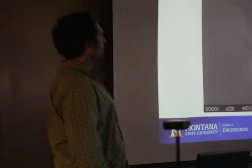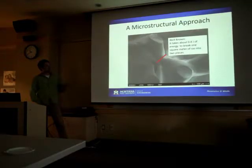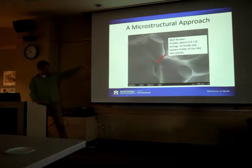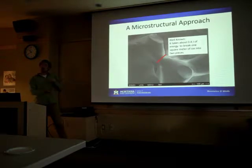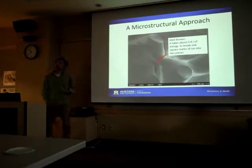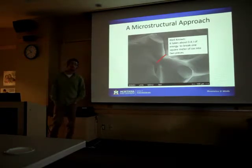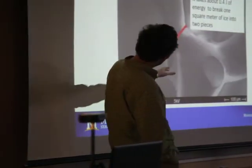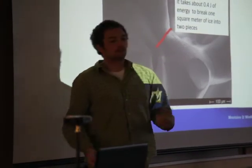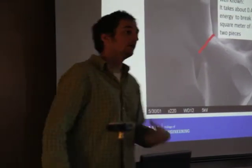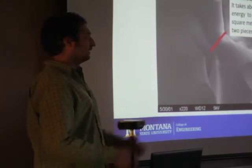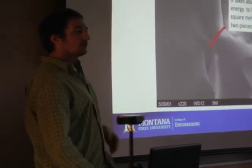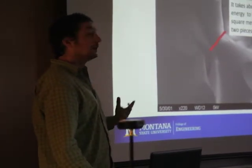We know from the literature on ice that for a bond hypothetically a square meter in size, it would take about 0.4 joules of energy to break it into two pieces. So if we take our images of snow and know how big each bond is, we can predict how much energy it's going to take to break that one bond. Then we look at a sample with many bonds and figure out how much total energy we're putting into breaking all those different bonds.